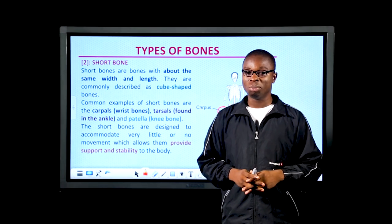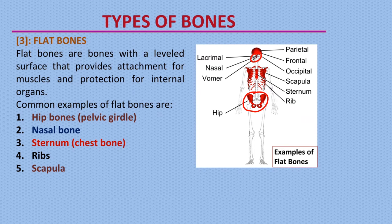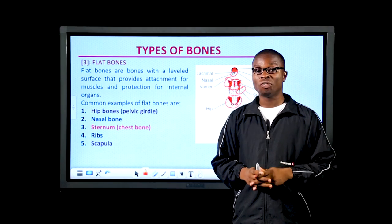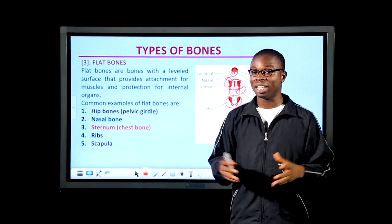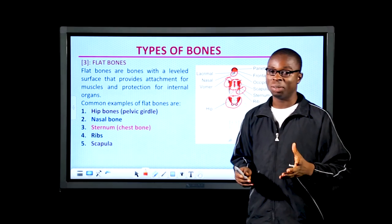Flat bones, as their name implies, are bones with leveled surfaces. Common examples include the hip bones, the nasal bone, the sternum (breastbone), the ribs, and the scapula (shoulder blade). Flat bones generally provide attachment for muscles and protection for internal organs.